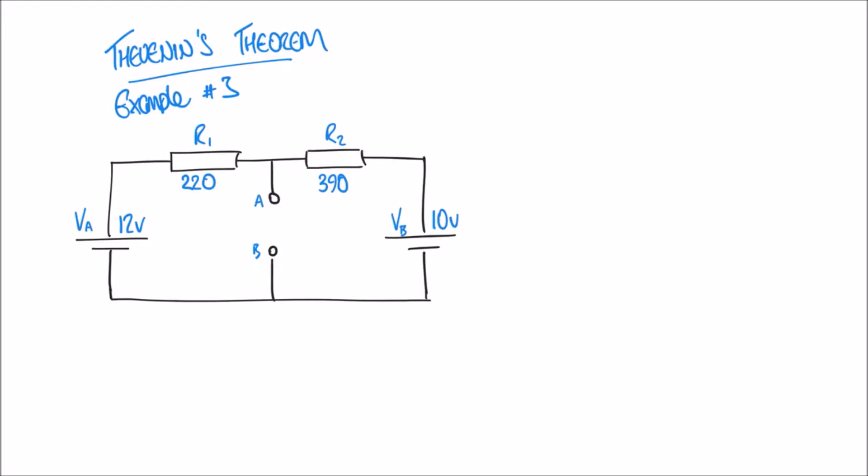We're going to deal with this problem by using something called the superposition principle. The superposition principle involves making our lives a little bit easier by only dealing with one power source at a time. So we'll work out the values in this circuit just using the left-hand power supply VA, and we'll ignore VB. Then we'll do the opposite — addressing the circuit with power supply VB, ignoring VA. And at the end, we'll bring our two sets of results together to get the total answer.